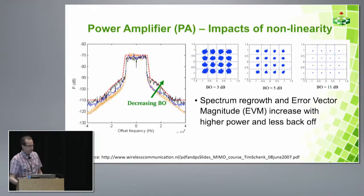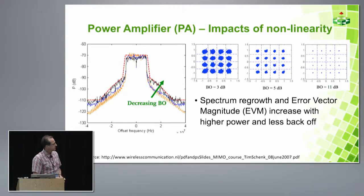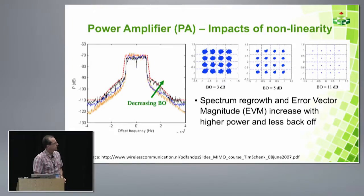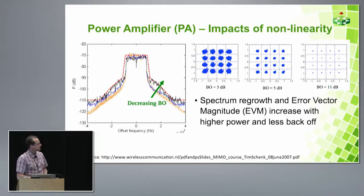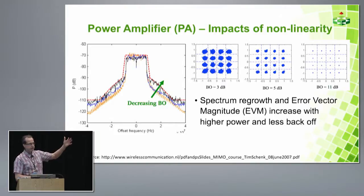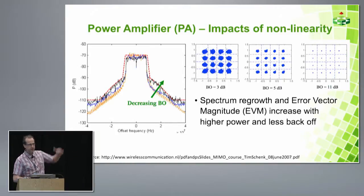When the PA signal is distorted, two things happen: the sidebands start to increase, so the modulation spectrum grows sideways; and the signal constellation gets distorted. With about 11 dB backoff you are in a safe region and not clipping. As you reduce backoff, the signal gets distorted. You want to stay away from the compression point.